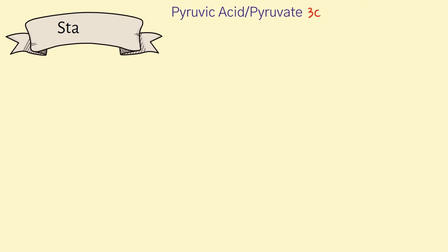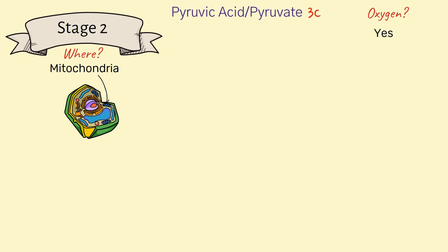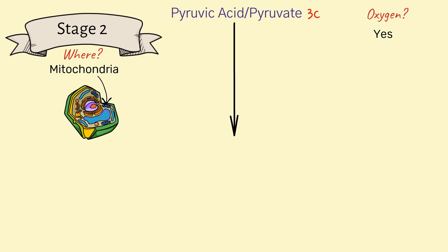We have pyruvic acid, this three-carbon molecule — there are two of them, but we'll discuss one. If oxygen is present, it will enter stage two; oxygen is essential. Stage two takes place in the mitochondria of the cells — the powerhouses. Each pyruvic acid molecule is immediately broken down into a two-carbon molecule called acetyl-CoA.